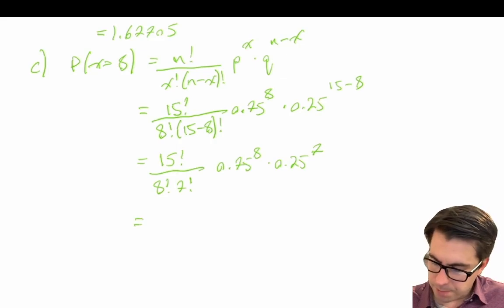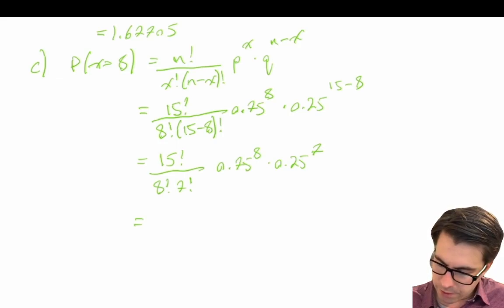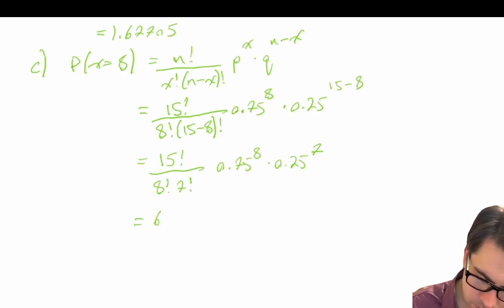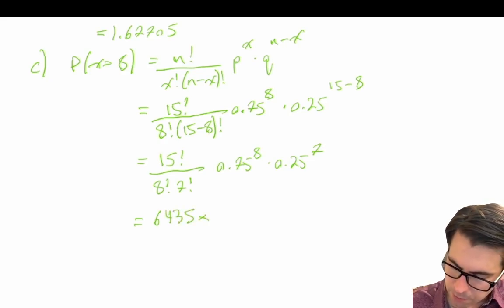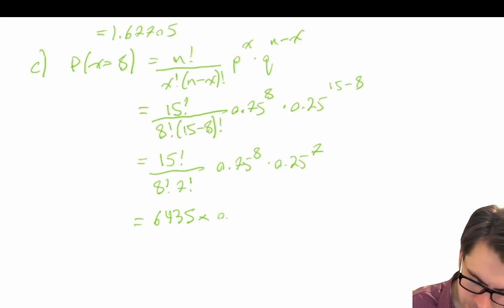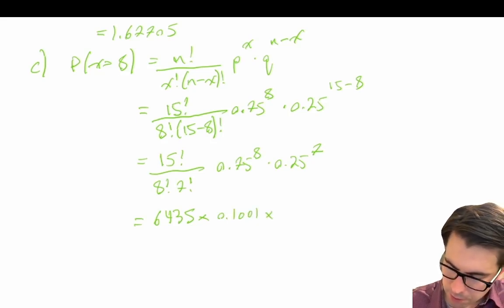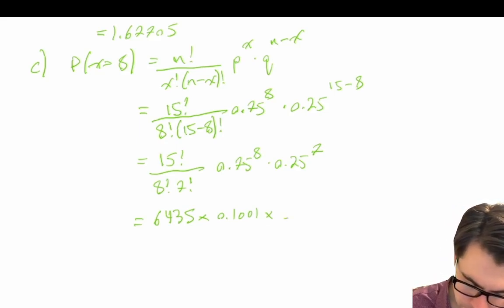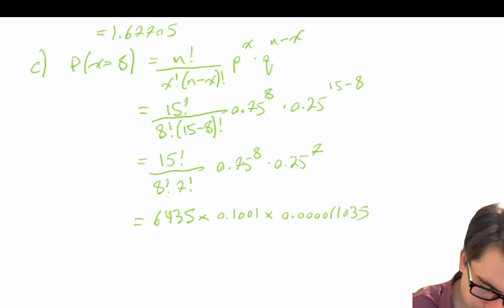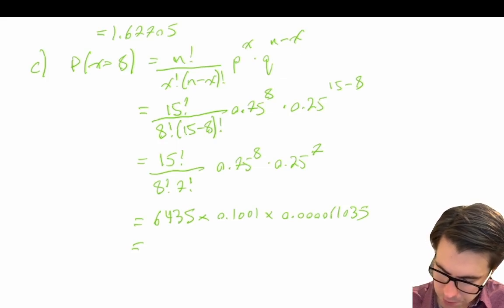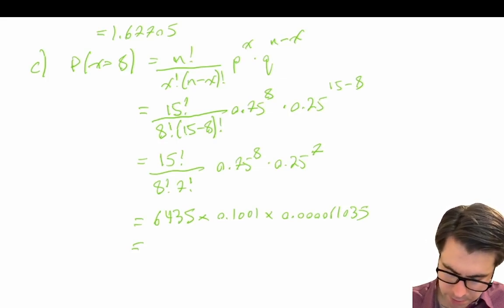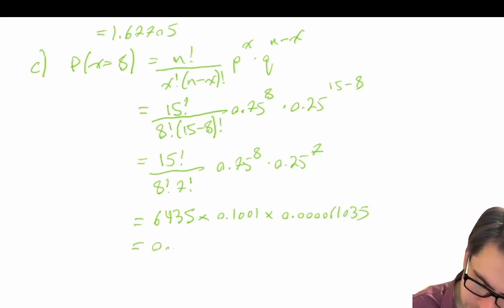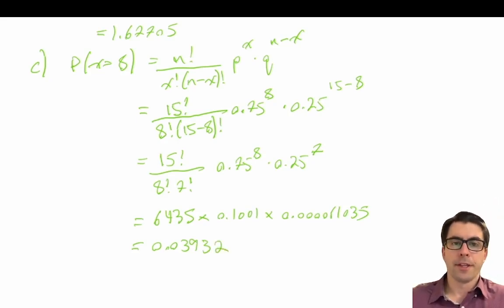So what we get is 15 factorial divided by 8 factorial times 7 factorial, times 0.75 to the power of 8, times 0.25 to the power of 7. Breaking this into steps: 15 factorial divided by 8 factorial times 7 factorial gives us 6435, times 0.75 to the power of 8 which equals 0.1001, times 0.25 to the power of 7 which equals 0.0061035. Multiplying these together gives us a final answer of 0.03993. So that's our probability that x equals 8.